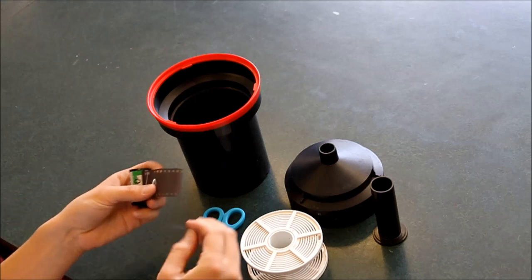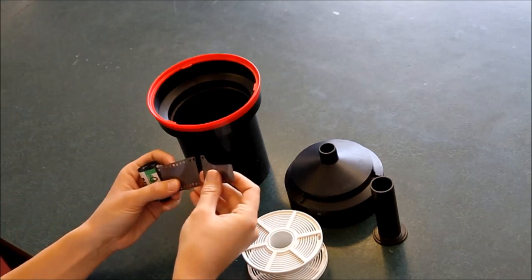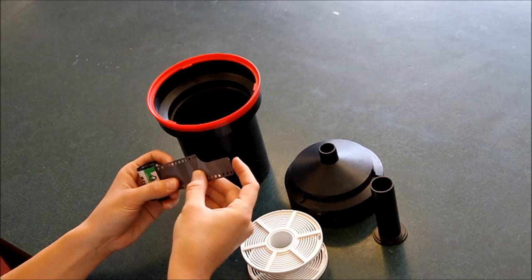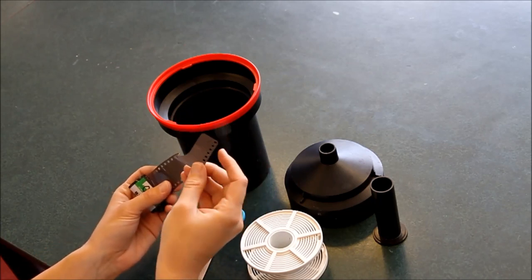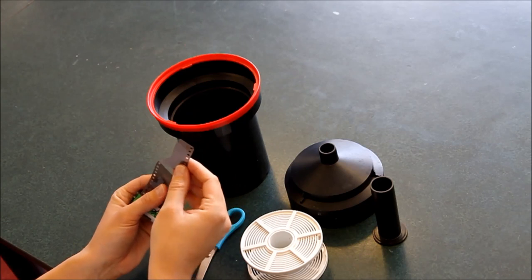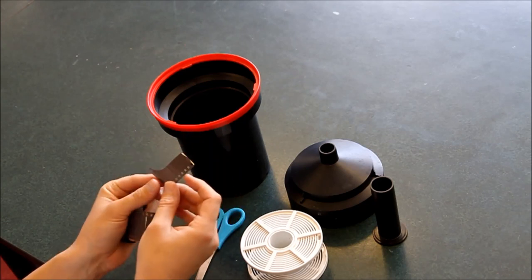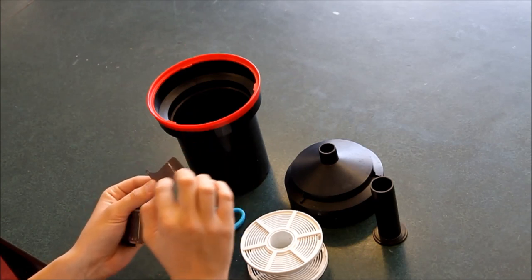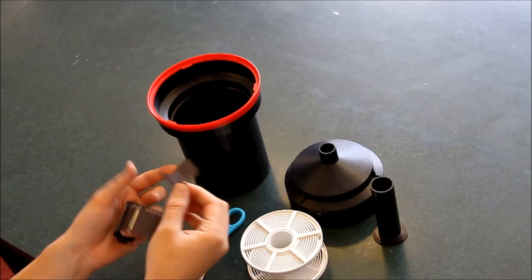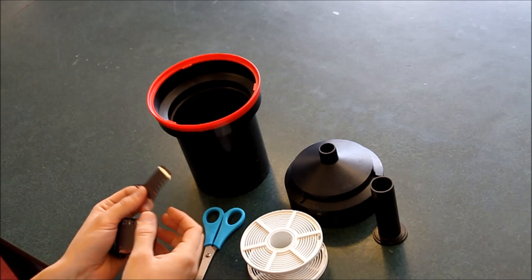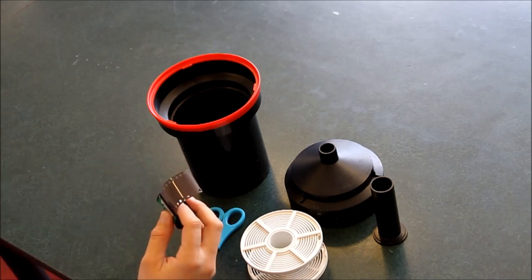The first thing you need to do is cut off that funny shaped tab off the end, because if you don't do that your film won't go around your canister very smoothly and these parts here can get caught and make it malfunction. So you're cutting that part off first so it's nice and straight.